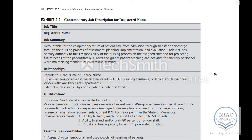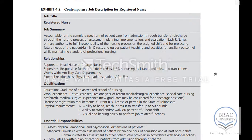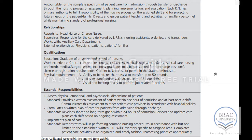This is an example of a job description for a registered nurse. We have the job title. Other common elements of the job description are the job summary, the relationship — that means to whom the person reports and who reports to that person — then the qualifications that are required and the responsibilities.